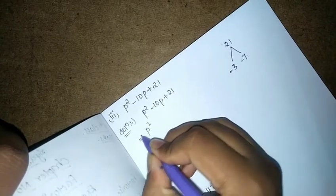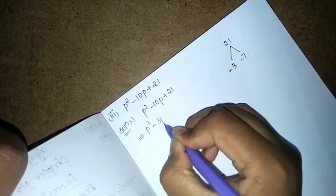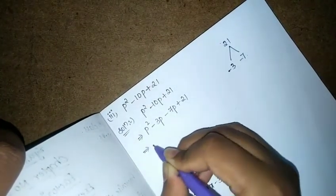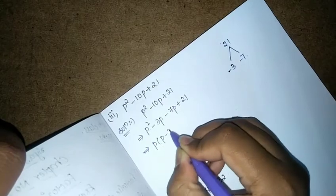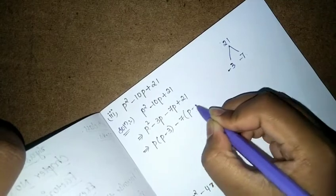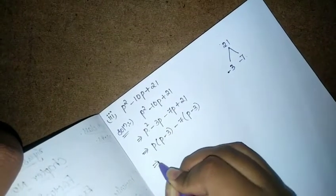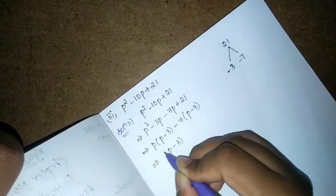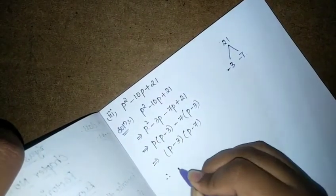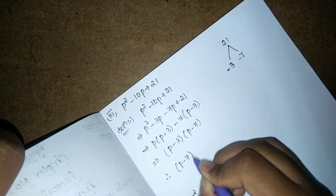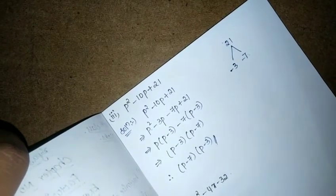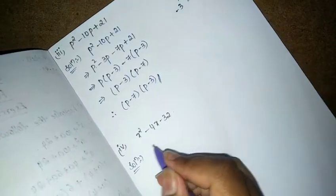So here we can write p² - 3p - 7p + 21. We have p common from these 2, then we get p minus 3. Here 7 we have common, then p minus 3. Then we have p minus 3 into p minus 7. So our final solution is (p - 7) into (p - 3). These are the factors of p² - 10p + 21.